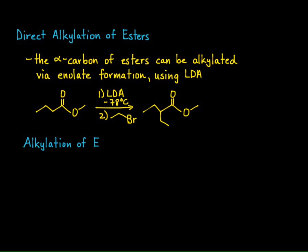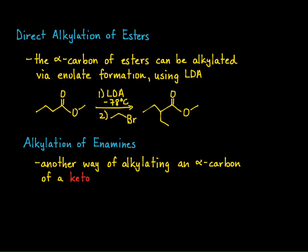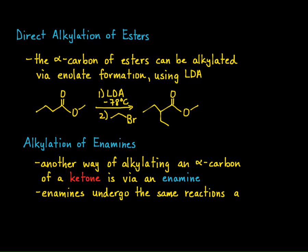We can also alkylate enamines, and through this process this is simply another way of alkylating an alpha carbon of a ketone. Remember, enamines are formed from the reaction of a ketone or an aldehyde with a secondary amine. These enamines undergo the same types of reactions as enolates because they have an alkene present. Seeing the continuity and similarity between functional groups is very important.